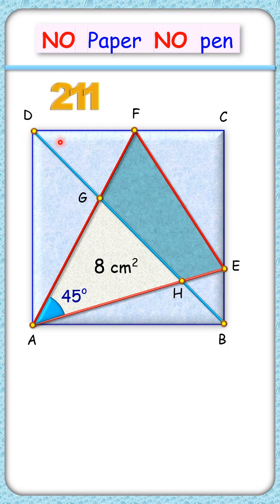There is no restriction related to points F and E except that they should form an angle of 45 degrees at vertex A. Let's shift point F to the right side and E to the bottom while keeping the angle at 45 degrees.